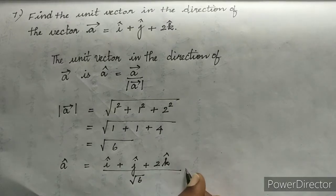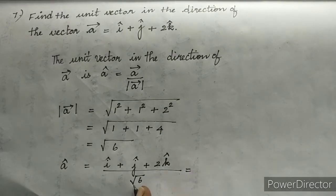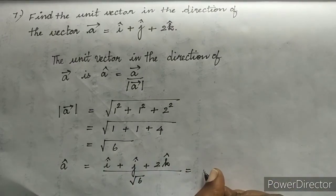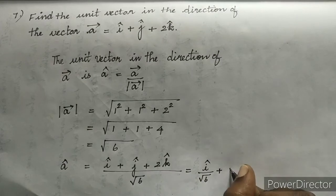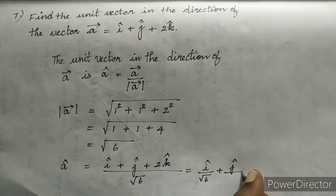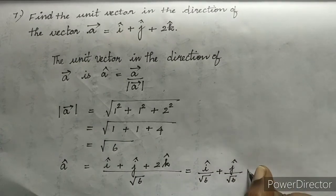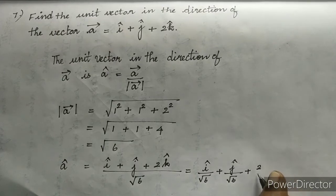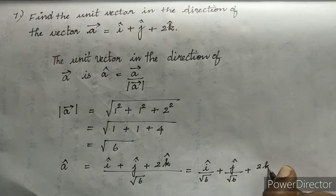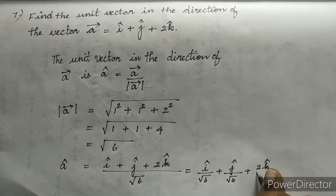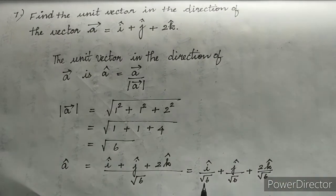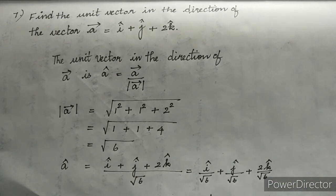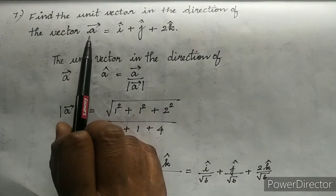So we substitute in the formula: A cap = (I cap + J cap + 2 K cap) / √6. We divide each and every term by √6, giving I cap/√6 + J cap/√6 + 2 K cap/√6. This is the unit vector in the direction of A vector.